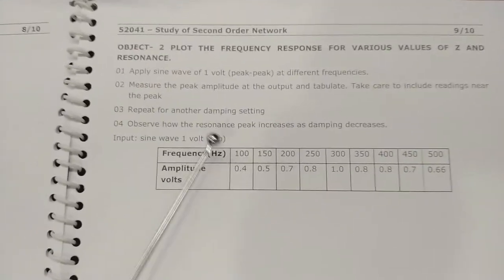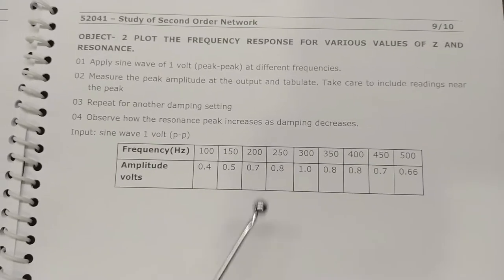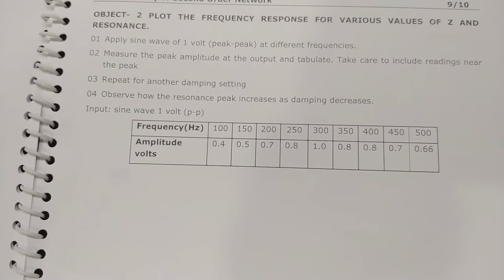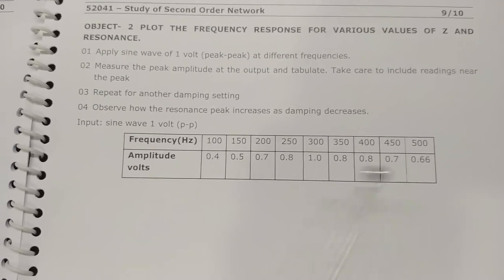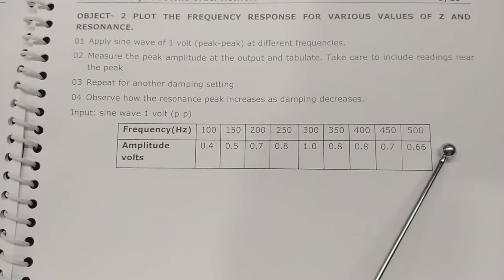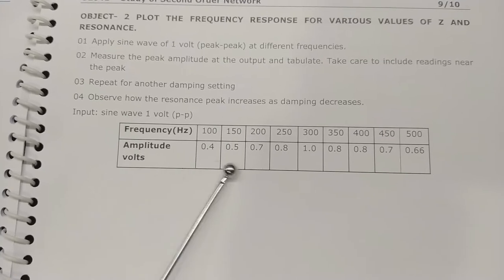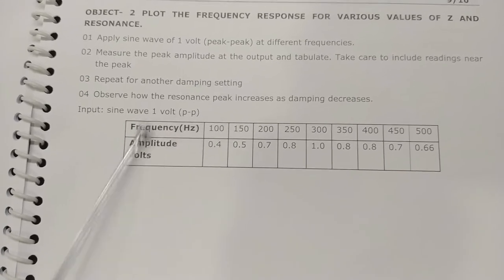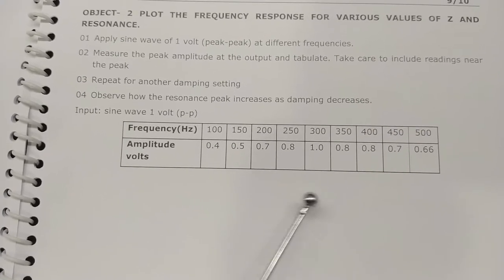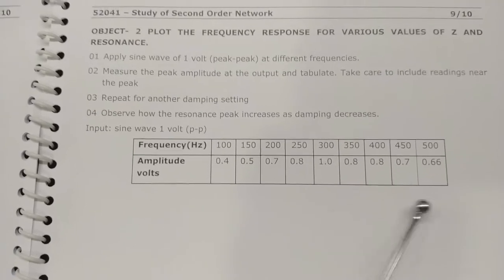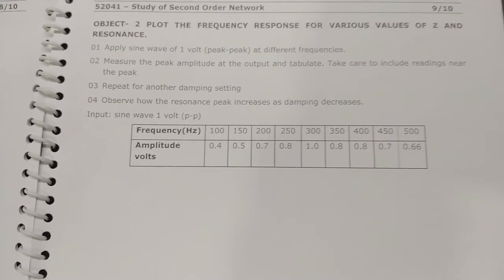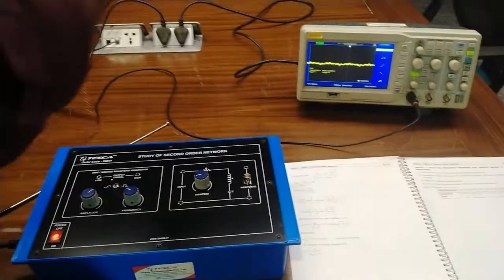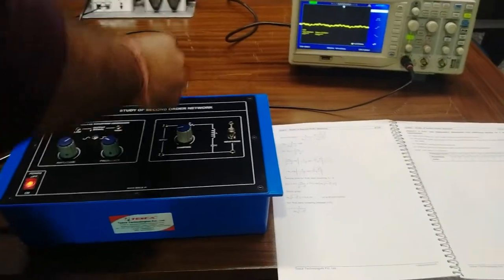Take care to include readings near the peak and repeat for another damping setting. We will also observe how the resonance peak increases as damping decreases. For input from 100 Hz to 500 Hz at different frequency steps, we will find out the amplitude for different readings. Now we will also do the same practical and find out the different values accordingly — first we will provide the sine wave to the input.